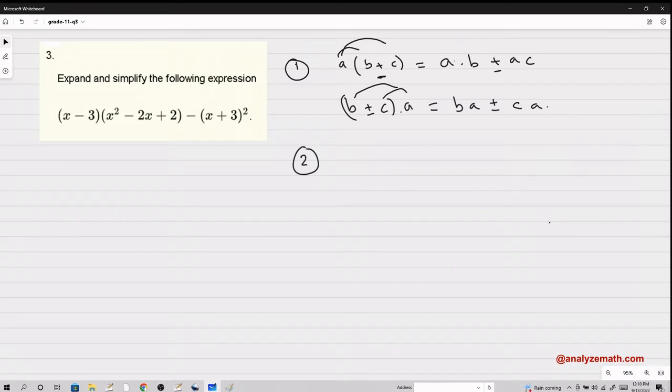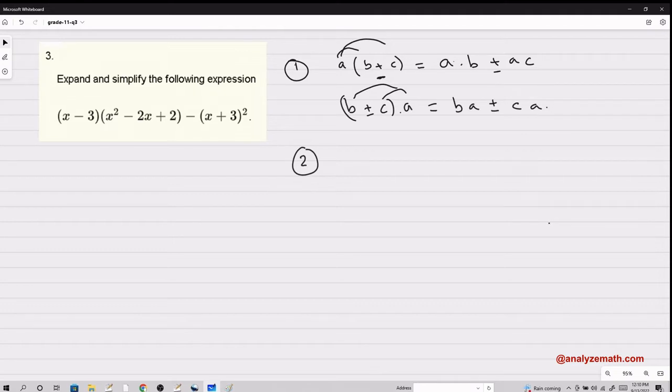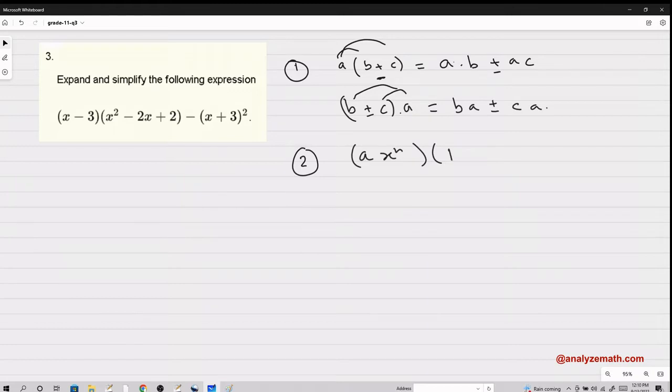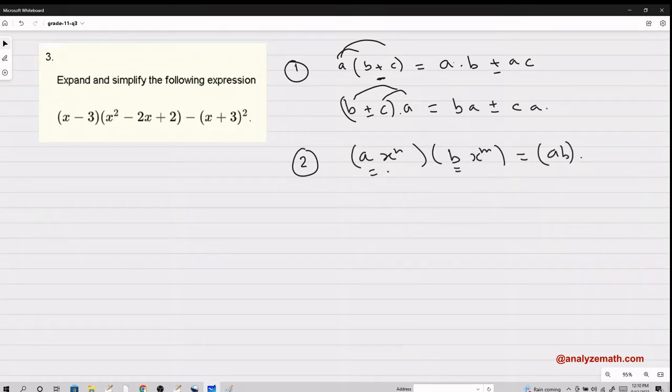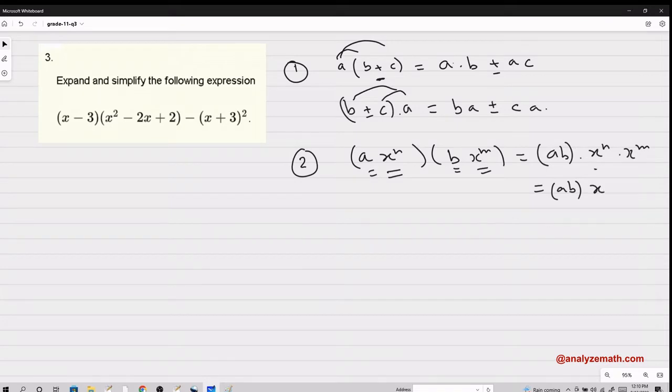The second thing is when you multiply monomials. A monomial is a coefficient with a letter or several letters to a certain power. So if you have a number times x to the power n, multiply by another monomial b times x to the power m, you multiply the numbers together and then multiply x^n by x^m together. You apply the product of two exponents with the same base, and that gives you n plus m.